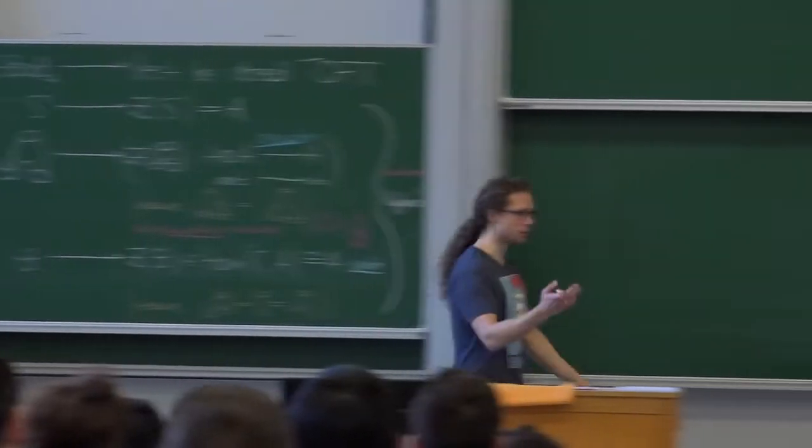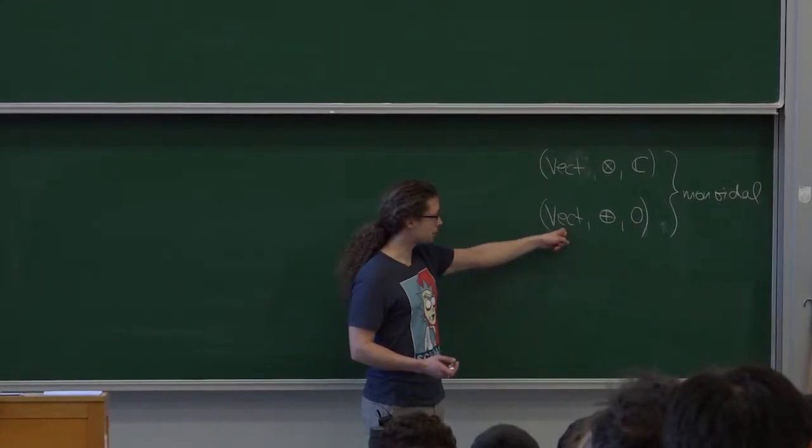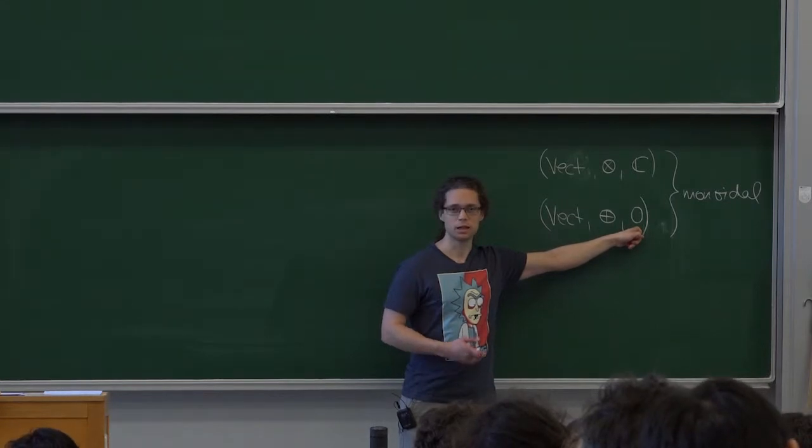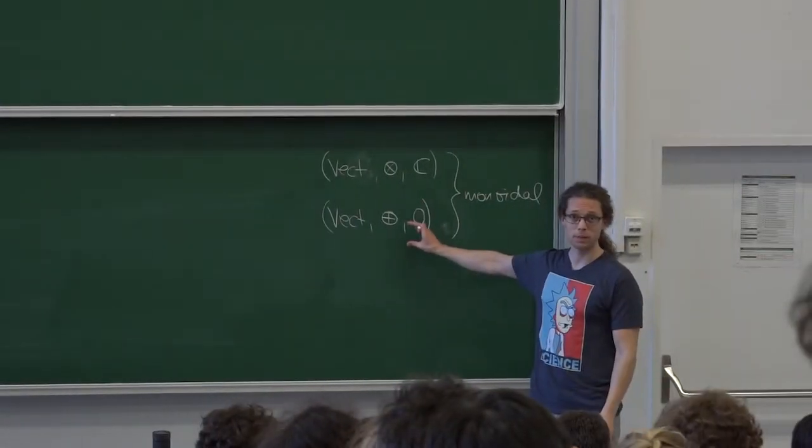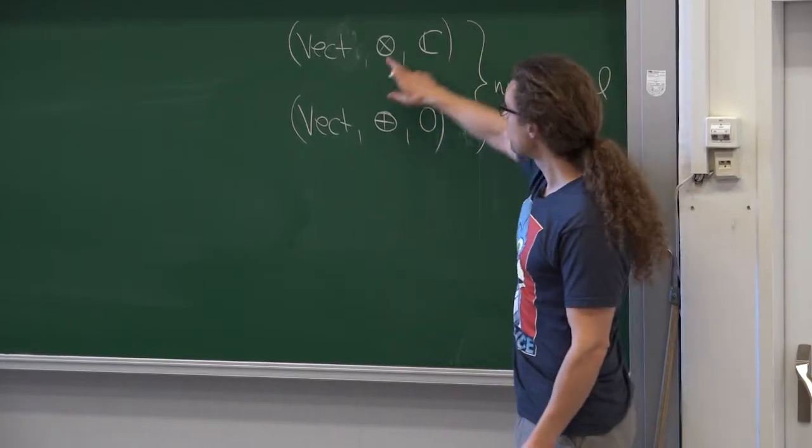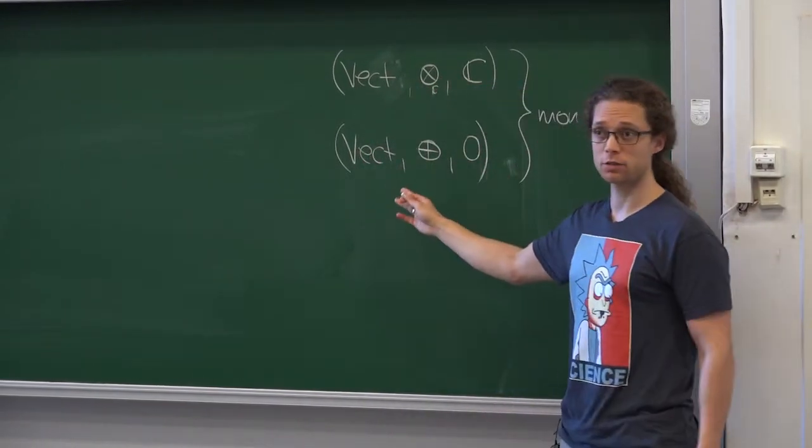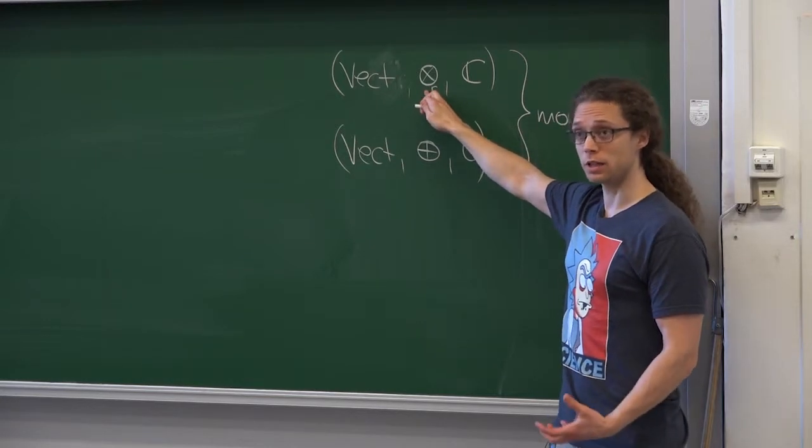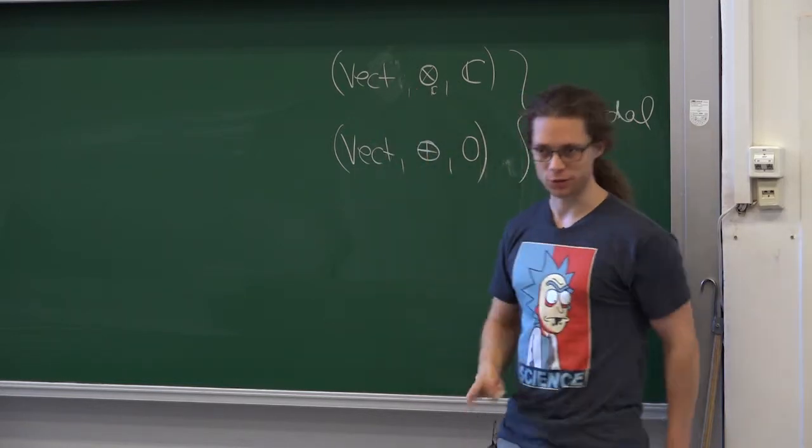Along the way there was a comment by Sylvain which I misunderstood. I think he was asking whether the category of vector spaces together with taking direct sums and the zero vector space is also a monoidal category. And I said no because I was confused. Of course it is. So it's not true that this is not a monoidal category. However, it's also true that this is not the right monoidal category that we need to consider to do quantum physics.